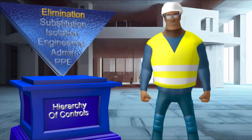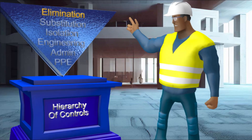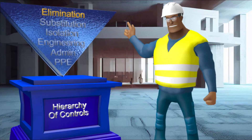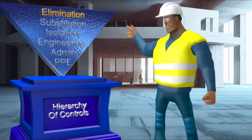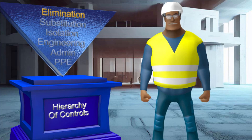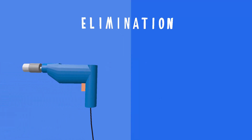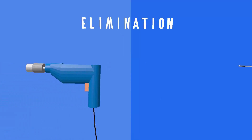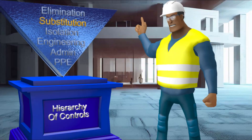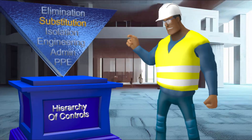Whenever faced with a hazard, we must always begin by trying to eliminate the hazard outright. An example would be eliminating extension cords by using battery-powered tools. The following most effective control is substitution.